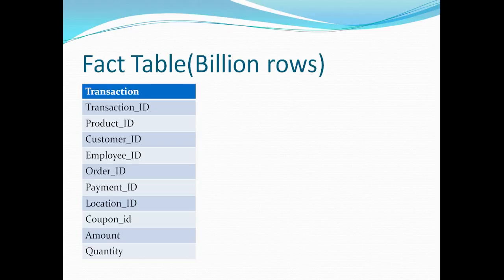If we form the transaction table with all these columns, the first one is the surrogate key, the transaction ID. Then we have the product ID which symbolizes the product that is being sold. Then the customer who bought the product, his ID, and the employee who assisted in the transaction, his ID.